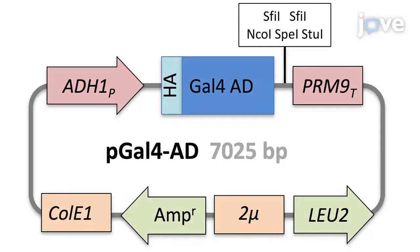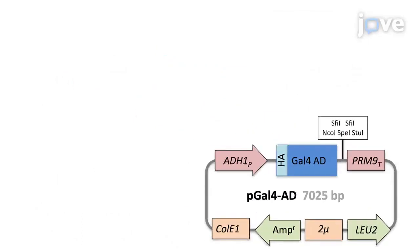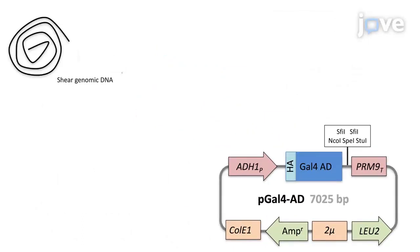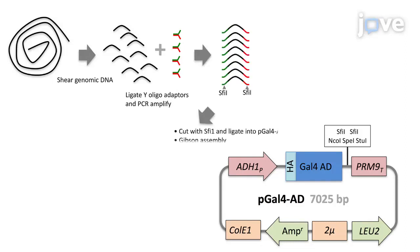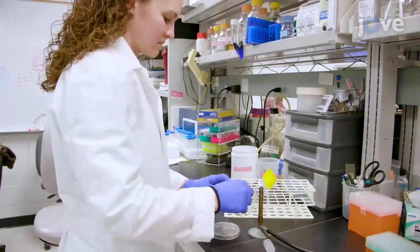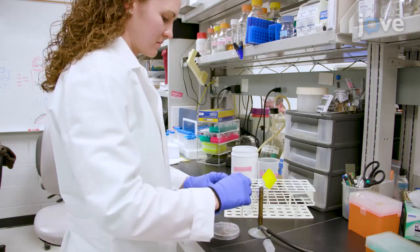In addition, a new yeast-2 hybrid library in the streamlined prey plasmid vector, PGAL4-AD, was created. Genomic DNA was fragmented by shearing, size-selected, modified with adapters, and inserted into PGAL4-AD to create the SACS-AirTab yeast-2 hybrid library.